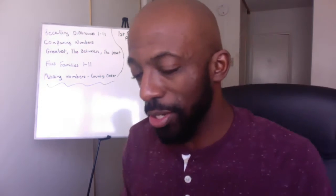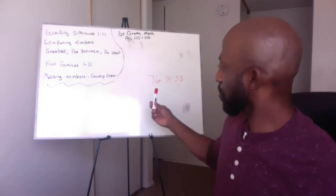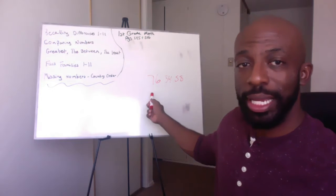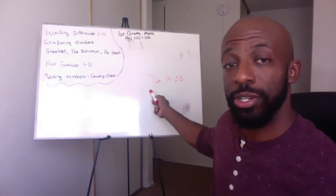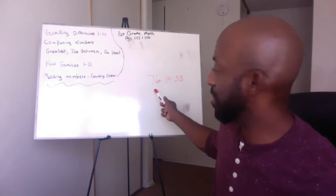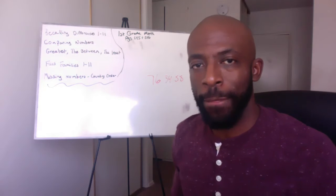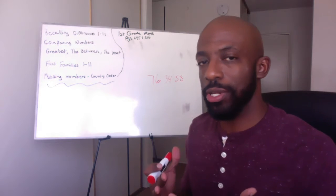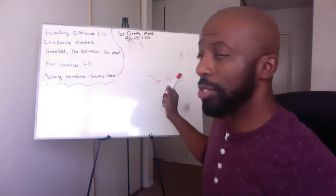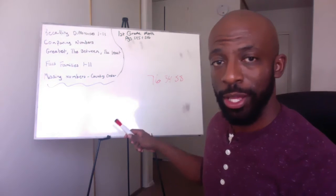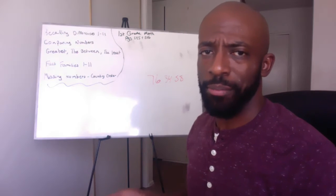Before we start, let's look at some of these least and greatest numbers. When we're looking at a least or greatest number, we have to see this. This first number is 76, the next number is 34, and that number is 58. When we're looking at those numbers, what are we trying to do? We're trying to find out which is the smallest, which number is the biggest, and which number goes in the middle.